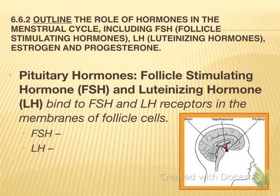FSH promotes the development of the egg. Prior to ovulation, this hormone is increasing, promoting the development of the egg in the follicle. It causes not only the follicle to form but the follicle wall to thicken. It causes secretion of follicular fluid to protect the egg cell, and it causes secretion of estrogen once the follicle wall has developed.